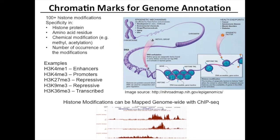ChromeHMM leverages largely genome-wide maps of histone modifications, but can also take other types of data, such as open chromatin. This data is typically mapped genome-wide based on ChIP-seq experiments, and there are dozens of different histone modifications. These five have become the core histone modifications of the Roadmap Epigenomics Project, and then there have been other marks mapped in smaller numbers of cell types.